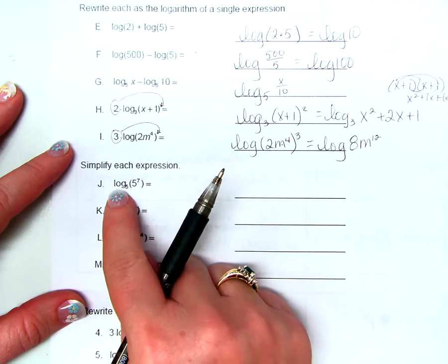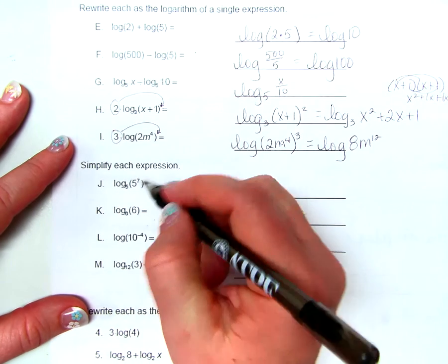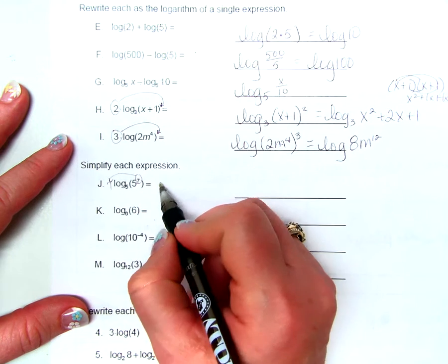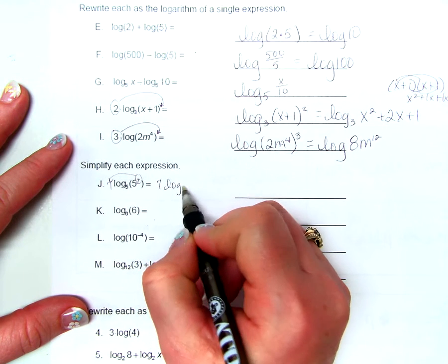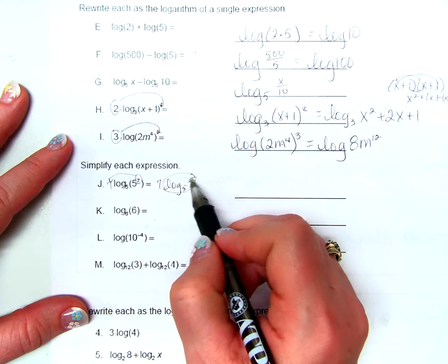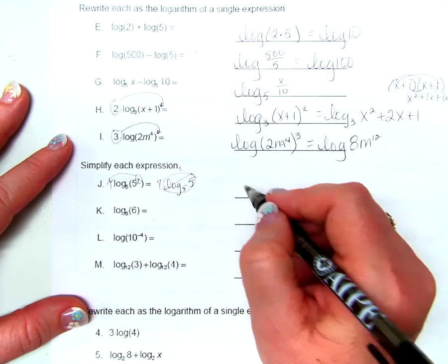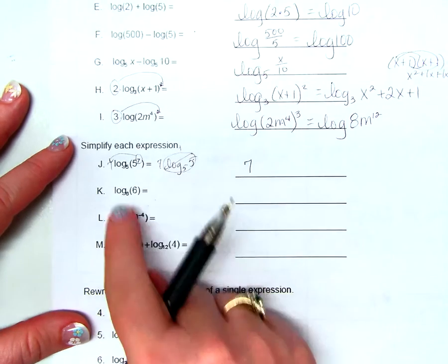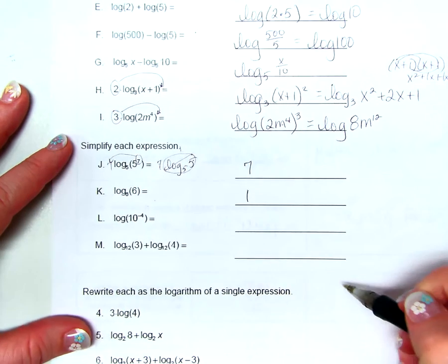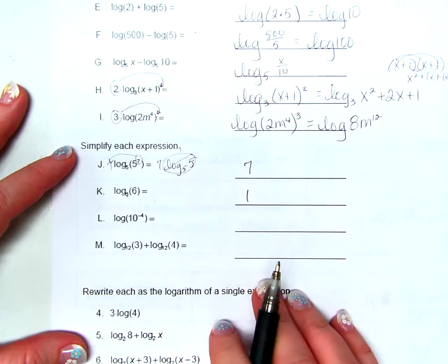Simplify each logarithm. Log base 5 of 5 to the 7th: 7 comes down in front as a multiplier, giving 7 log base 5 of 5. Since the base and the argument are the same, that equals 1, so 7 times 1 is 7. Log base 6 of 6: the base and the argument are the same, so that's 1.